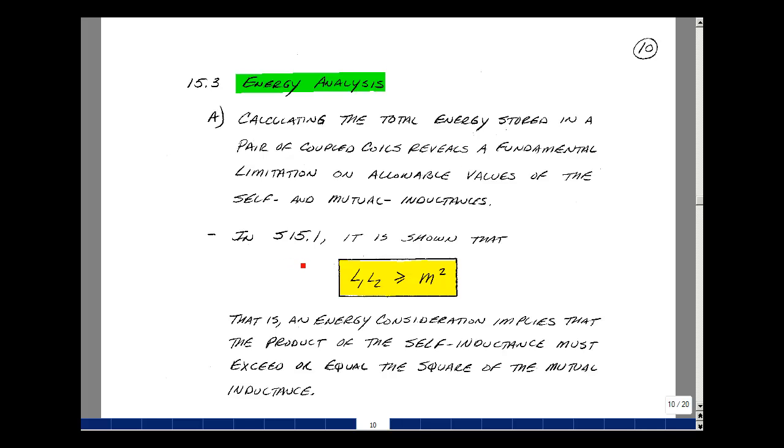In supplemental problem 15-1, we're going to do an energy analysis of a pair of coupled coils, which will yield the following equation: L1 times L2 is greater than or equal to m squared. In other words, if we use the conservation of energy, it'll imply that the product of the self-inductance has to be greater than or equal to the square of the mutual inductance.